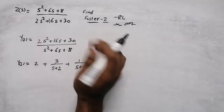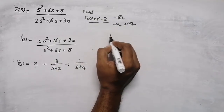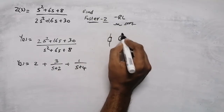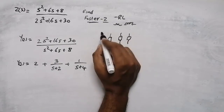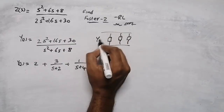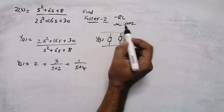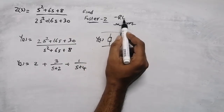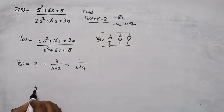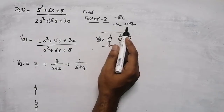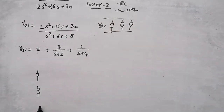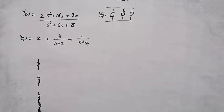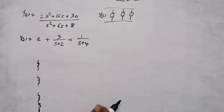In Foster Form 2, admittances are connected in parallel. Since this is an RL network, there will be a resistor and an inductor. For a combination of resistor and inductor, you connect them in series — that is the topology for each branch in Foster Form 2.